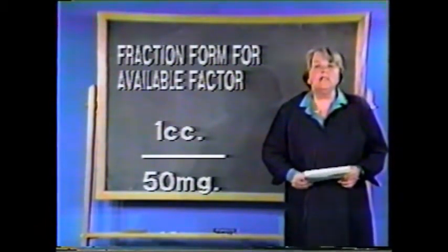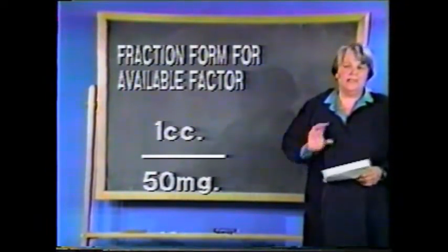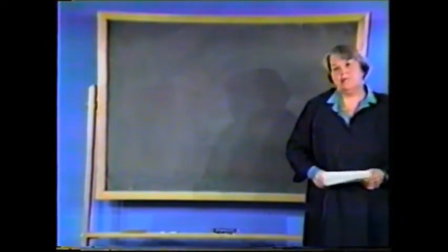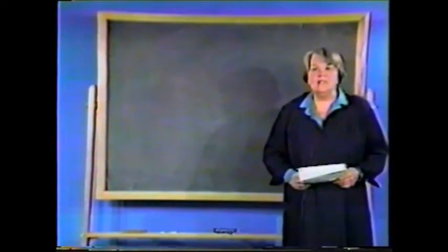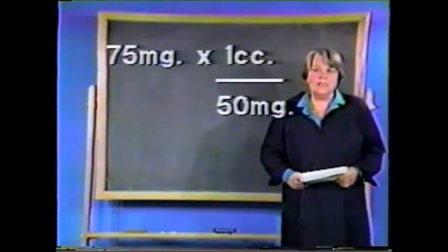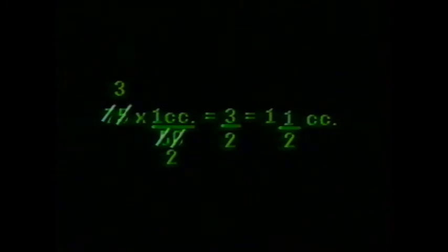Remember that the numerator is the number upstairs — it's on top of the fraction bar. The denominator is below the fraction bar, or downstairs. Now we have 75 milligrams times one CC over 50. If you reduce, we get rid of the milligrams, then we can reduce by 25, so we get three times one CC over two, which is three halves, or 1.5 CC.